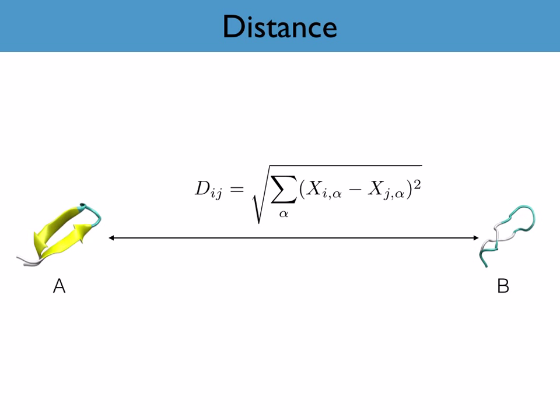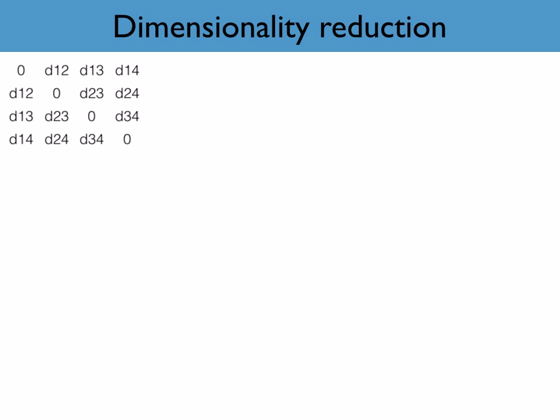As such, if we have multiple frames, we can construct a matrix of distances, like the one shown here. We can then use these distances in the construction of projections by requiring that the distance between the projections of two particular frames is the same as the distance between the two high-dimensional configurations.